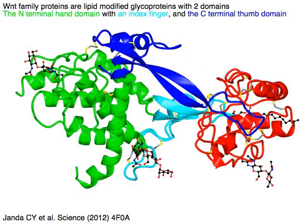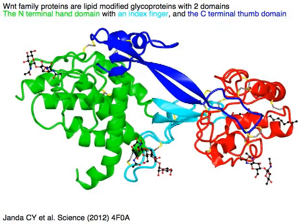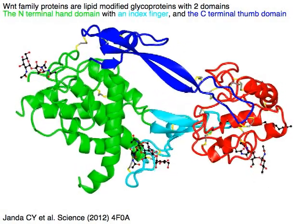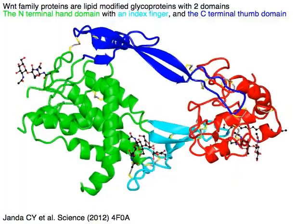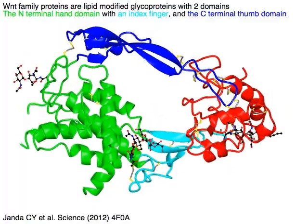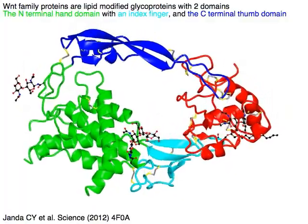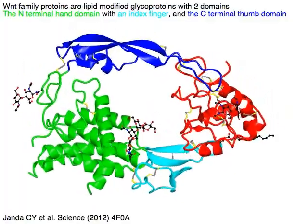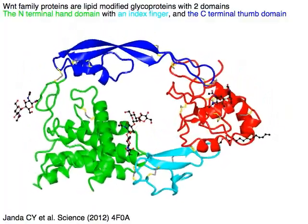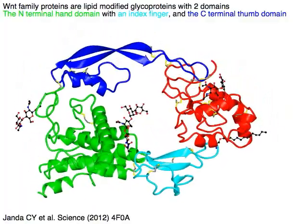WNT family proteins are lipid-modified glycoproteins with two domains: the N-terminal hand domain in green with N-index finger in cyan, and the C-terminal thumb domain in blue.